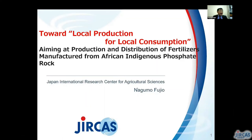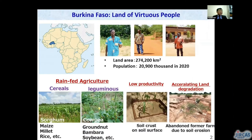Thank you, Chairman. I am Nagumo, a soil scientist at JIRCAS. Located in West Africa, Burkina Faso means 'land of virtuous people' in the local language. Agriculture is mainly rainfed and agricultural productivity is very low due to inherent low soil fertility together with a low application rate of fertilizer. Moreover, the soil is subjected to serious land degradation.